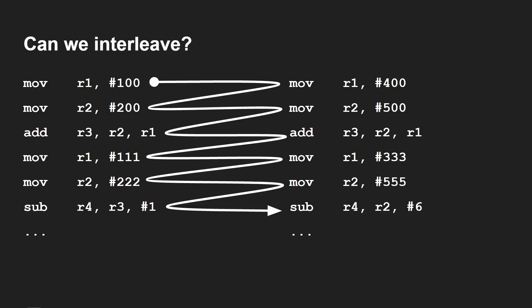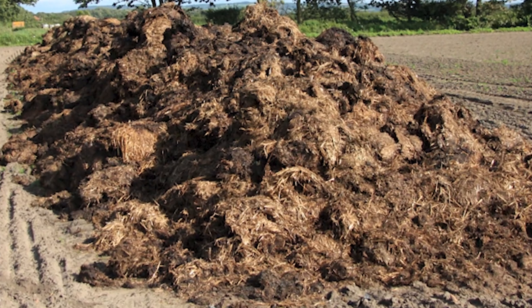Here's a question: can we interleave between the two programs? Can we do move 100 into R1 on the left, then swing over and do move 400 into R1 on the right, and then swing back? Well, no, we can't. Because if you look at the first instruction — move 100 into R1 — then the next instruction from the other task is move 400 into R1. When we get back to our first program, R1 — is it 100 or is it 400? We put 100 in there, and that's important for whatever calculation we're doing, and now the wrong number is in there. So the program will just fail. And obviously, the more you interleave, that will just cascade into an absolute dismal failure, ending in a big stinking mess.